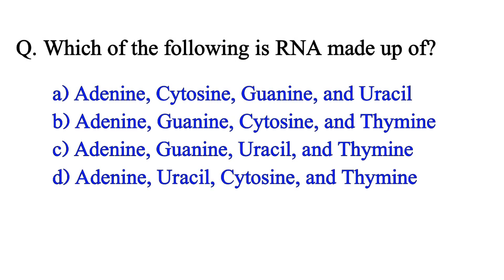Which of the following is RNA made of? Option A: adenine, cytosine, guanine, and uracil. Option B: adenine, guanine, cytosine, and thymine. Option C: adenine, guanine, uracil, and thymine. Option D: adenine, uracil, cytosine, and thymine.